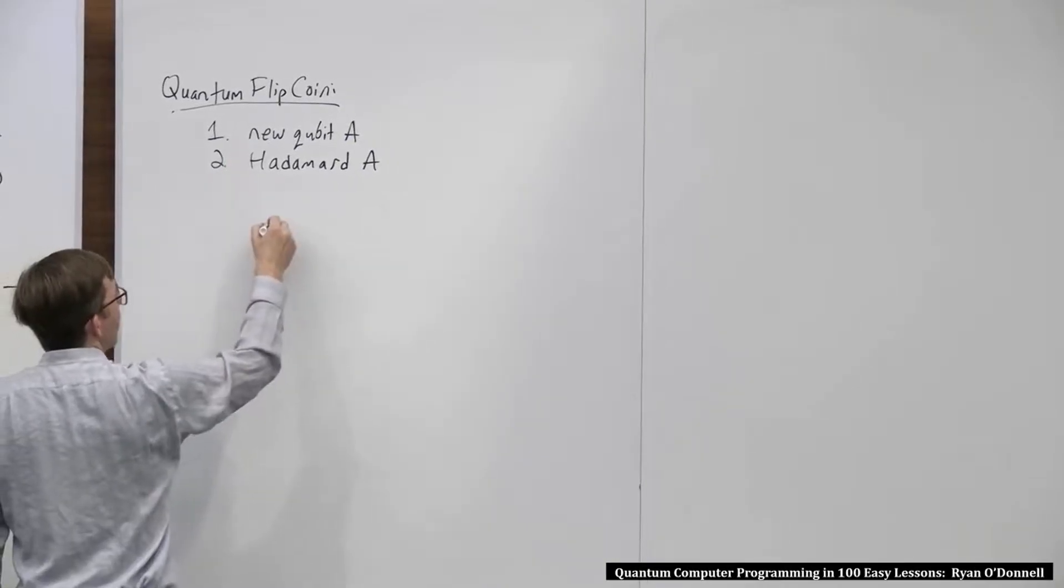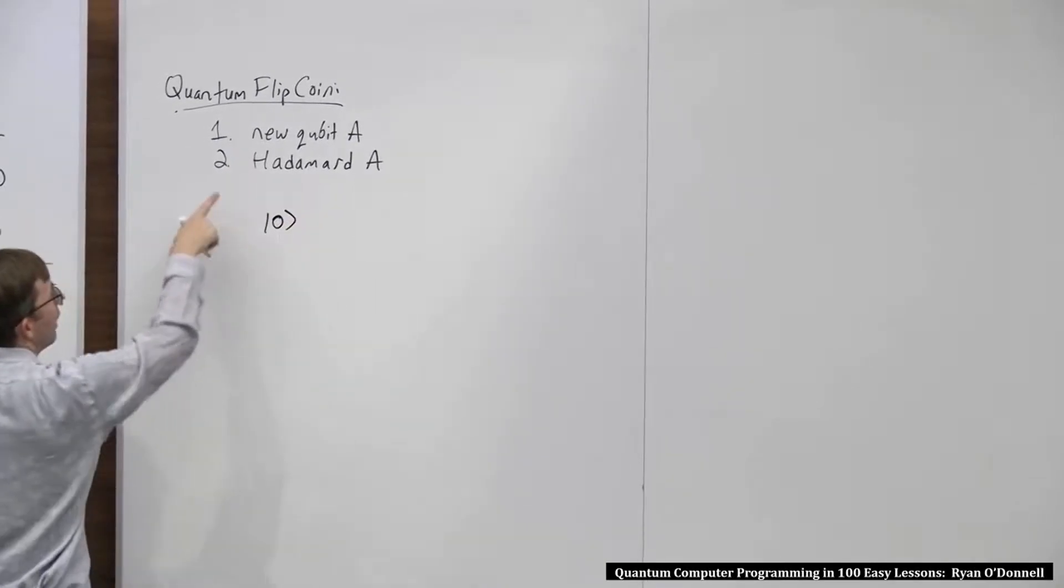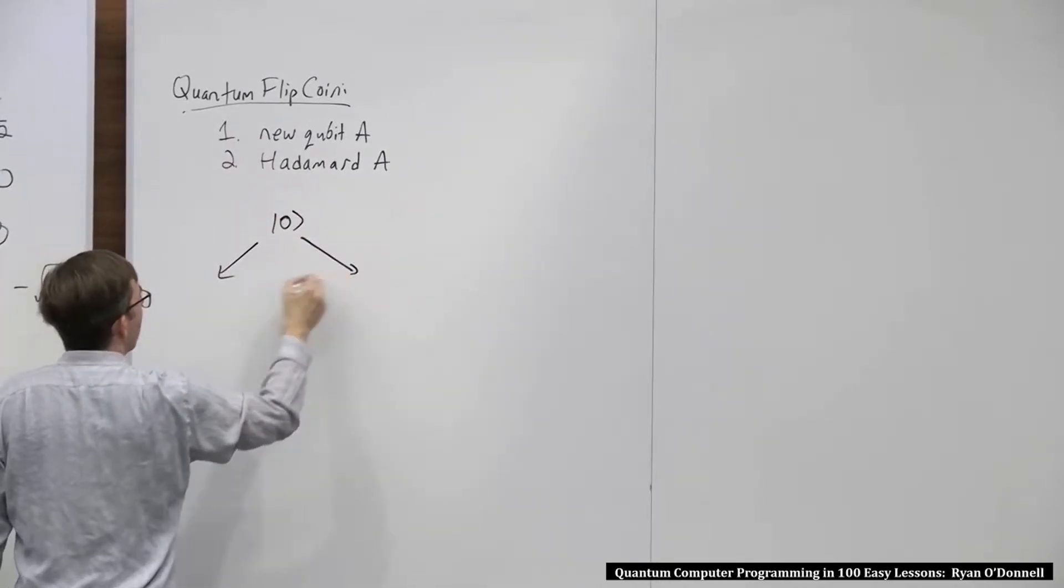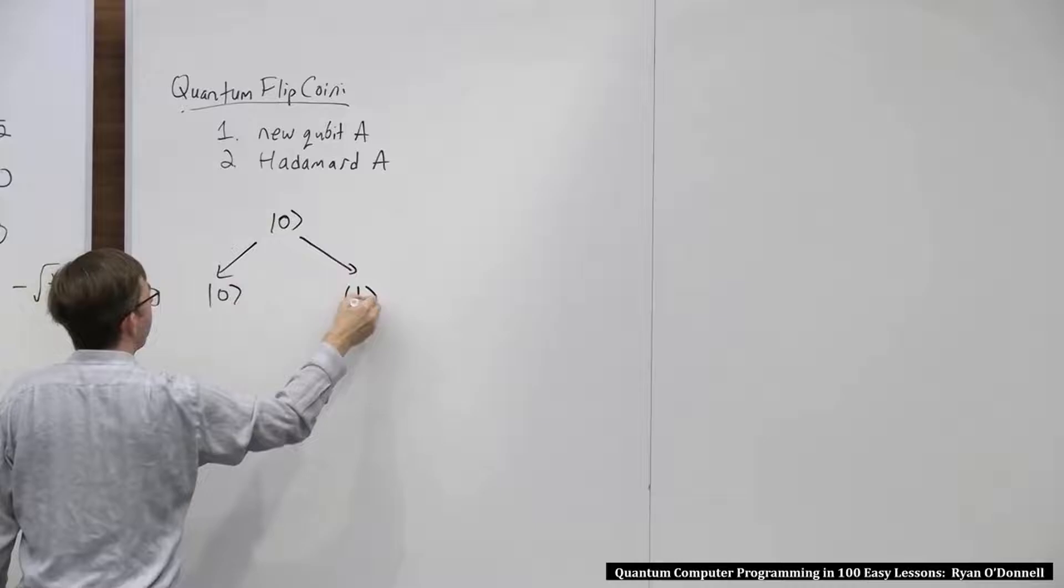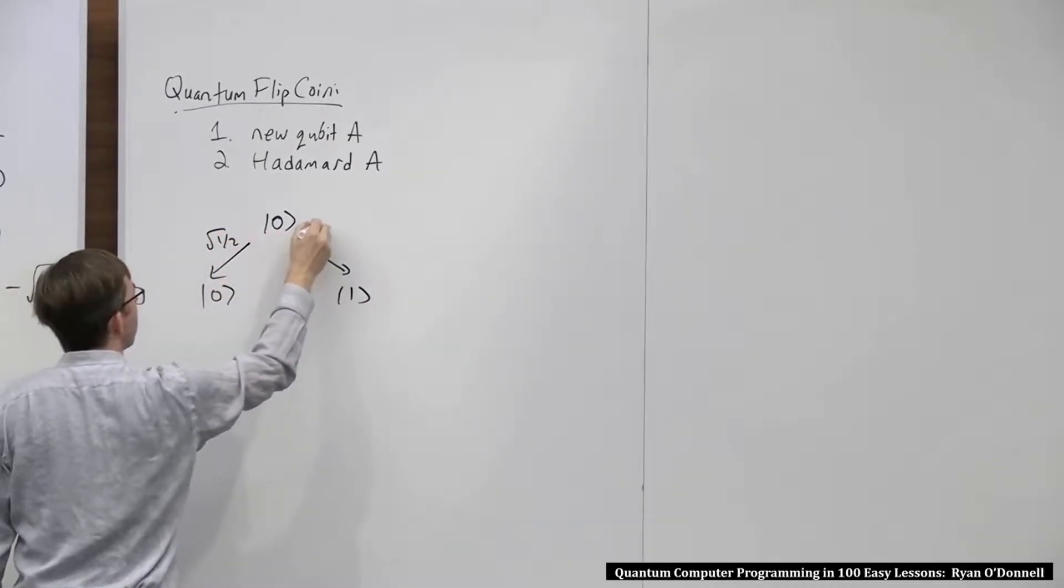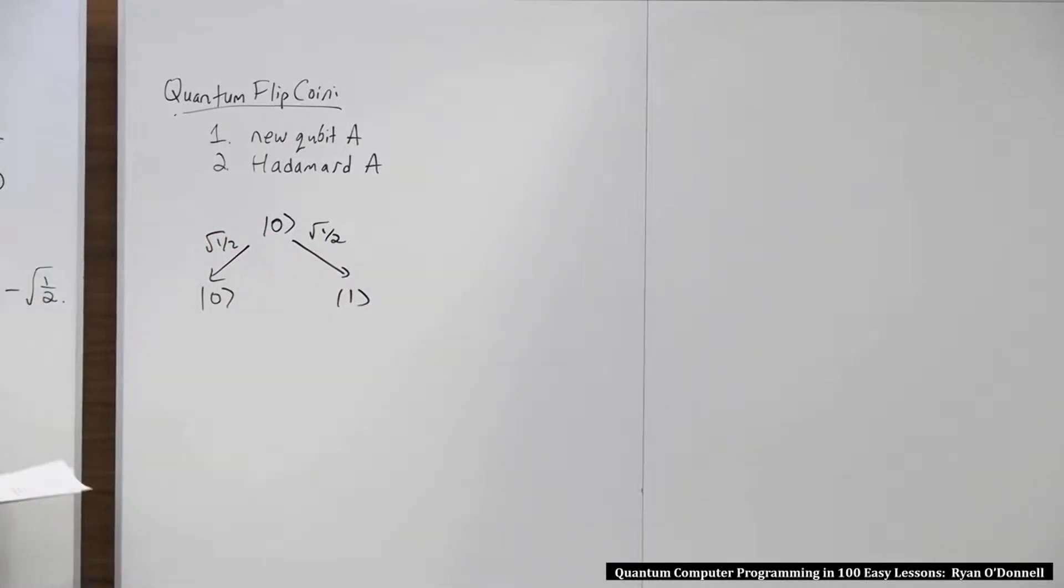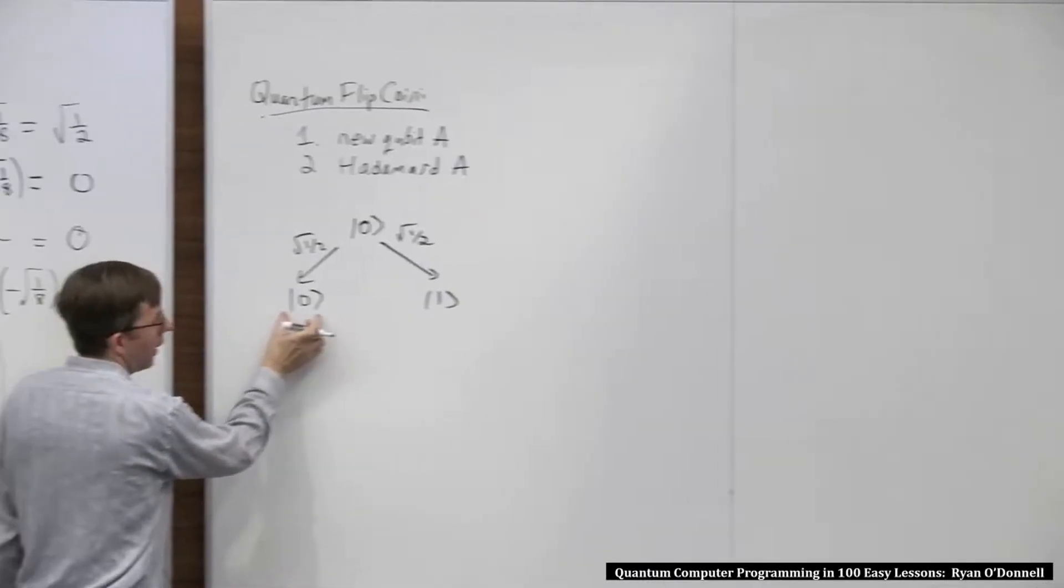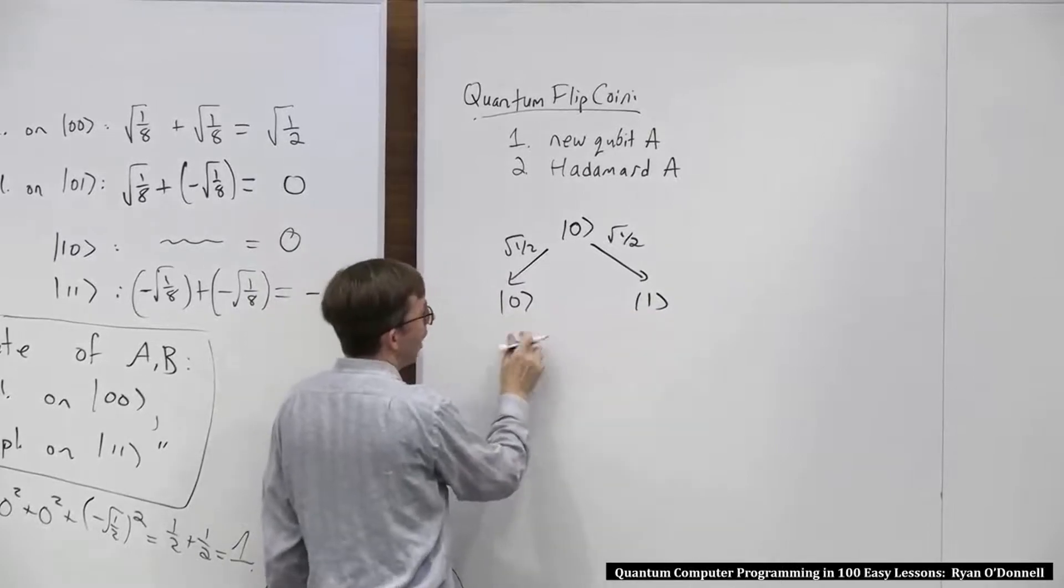We have one qubit, all our nodes are just going to be 0 or 1. It's initially 0, and then we do Hadamard on 0. That's, you get to 0 or 1. This is amplitude root 1 half. This is amplitude root 1 half. And that's it. The final state is, there's no collating to do.